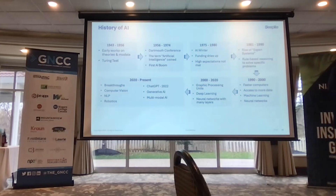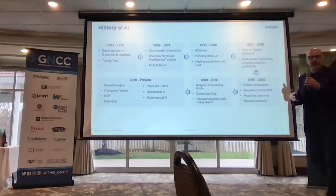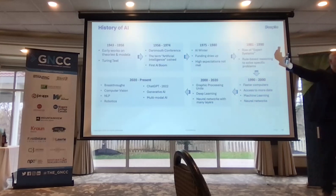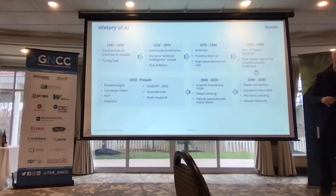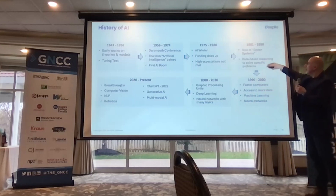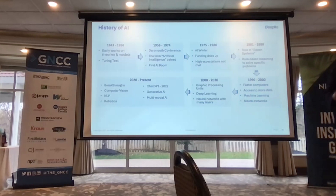That was really the start of what was called the first AI boom — people got excited, companies threw money at it, a lot of investment and research in that 20-year period. Then around 1975, people started realizing they'd sunk a lot of money into technology that wasn't reaping benefits, primarily because computers just weren't powerful enough to process the algorithms being contemplated. The math was way ahead of the processing. That started what was called the AI winter — everybody sort of abandoned it.